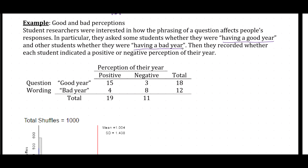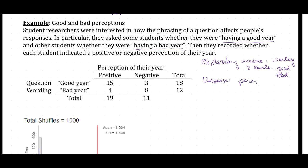In this case, the explanatory variable is the question wording. It has two levels: good or bad year. The response variable is the student perception. It also has two levels.